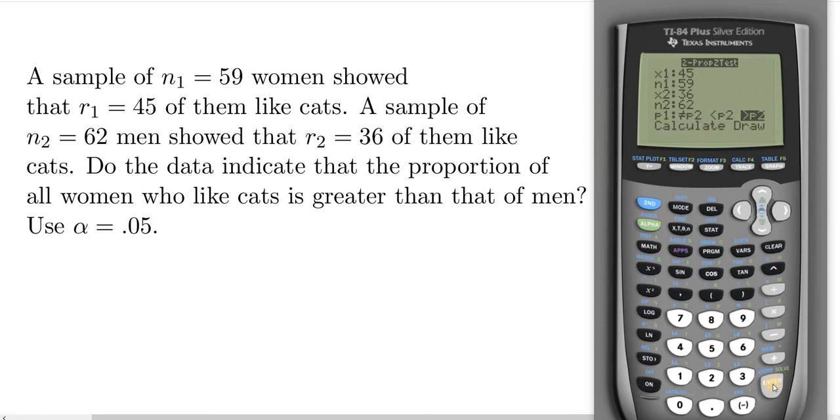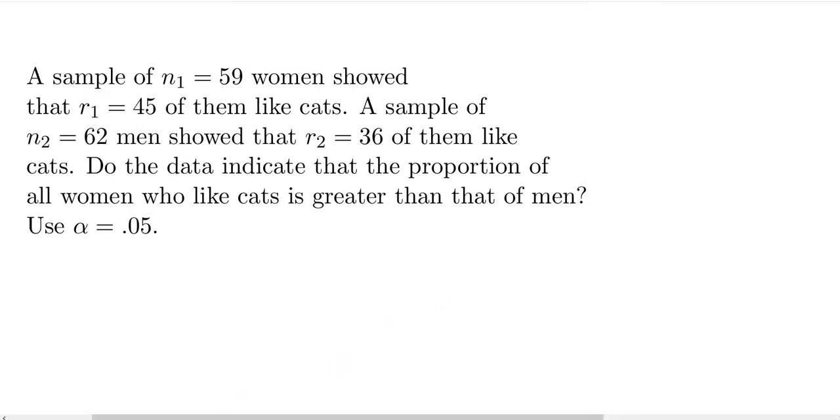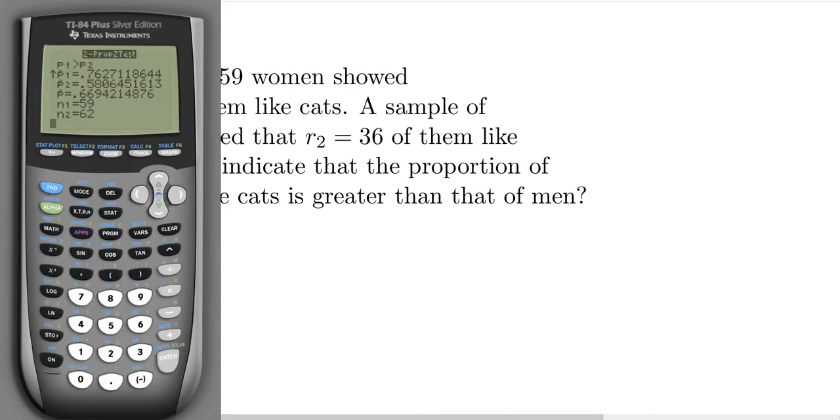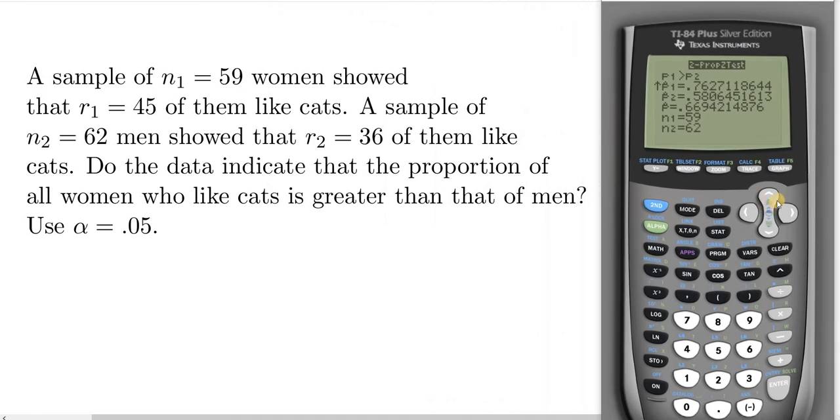Come down here and hit enter and there we have it, right there is our p-value, 0.0166682921. So you can use the p-value to determine the conclusion of the hypothesis test. Let me go back up so you see it. So because the p-value here, 0.016667, is smaller than alpha, we reject the null hypothesis. So we say there is sufficient evidence to support the claim that the proportion of all women who like cats is greater than that of men.